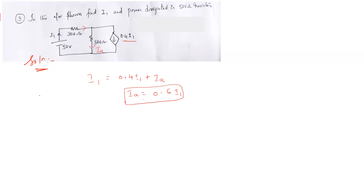Next we need to calculate the value of I1. We don't know I1, so I will apply KVL to this loop — loop 1. When applying KVL, the voltage source goes from minus to plus, so it is increasing voltage, giving us plus 50.